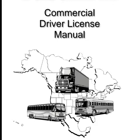Serious traffic violations are: excessive speeding (15 miles per hour or more above the posted limit); reckless driving; improper or erratic lane changes; following a vehicle too closely; traffic offenses committed in a CMV in connection with fatal traffic accidents; driving a CMV without obtaining a CDL or having a CDL in the driver's possession; and driving a CMV without the proper class of CDL and/or endorsements. You will lose your CDL for at least 60 days if you have committed two serious traffic violations within a three-year period involving a CMV, and for at least 120 days for three or more serious traffic violations within a three-year period involving a CMV.